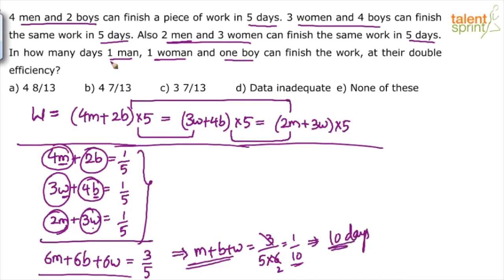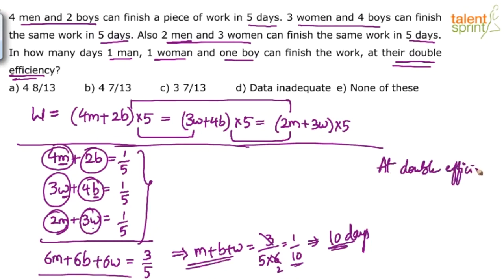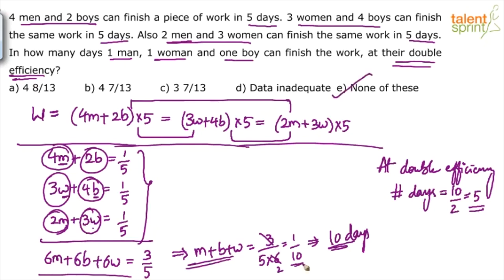But they work at double efficiency. At regular efficiency they take 10 days, so at double efficiency the number of days will be half of 10, which equals 5. So the answer is 5 days, which is option E — none of the other options.